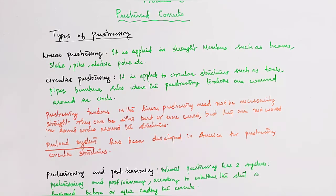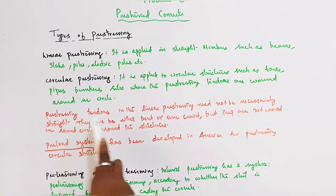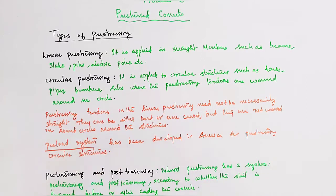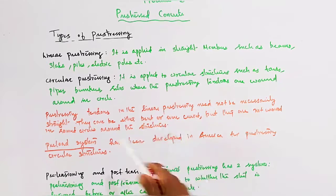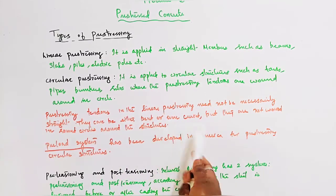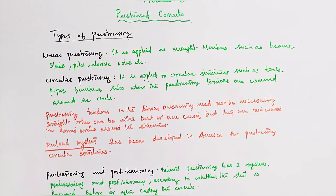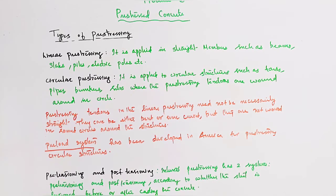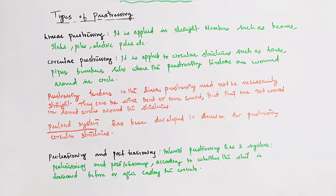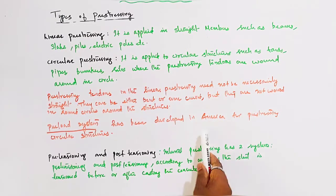So two types of pre-stressing are linear and circular. In linear pre-stressing, the tendons need not be necessarily straight - they can be bent or even curved. But they are not wound in circles around the structures. Circular pre-stressing is applied to circular structures.